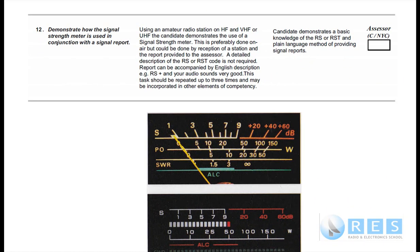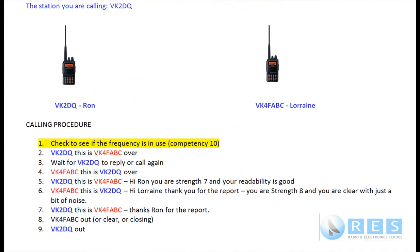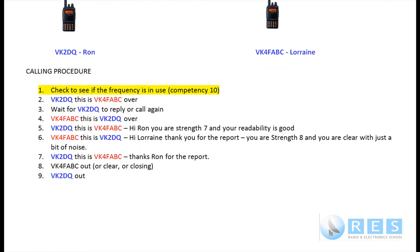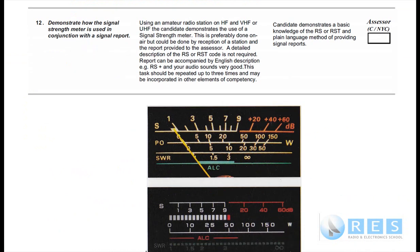We covered a great deal of this competency number 12 when we did number 11, because in number 11 we actually made a call to another station. We had to make a call to another station and at the same time we gave them a signal report. You don't have to do that, but if you do, the assessor will realise that and when he comes to do one of the later competencies, if he's found that you've already demonstrated that competency, he could just tick you off, and if he's not sure, he'll get you to do it, because number 12 is just contacting another station and giving them a signal report.